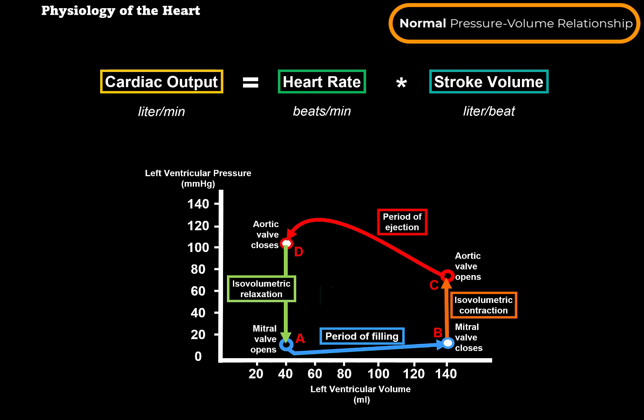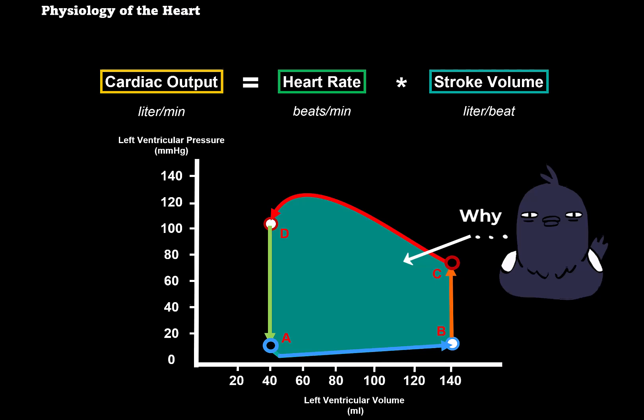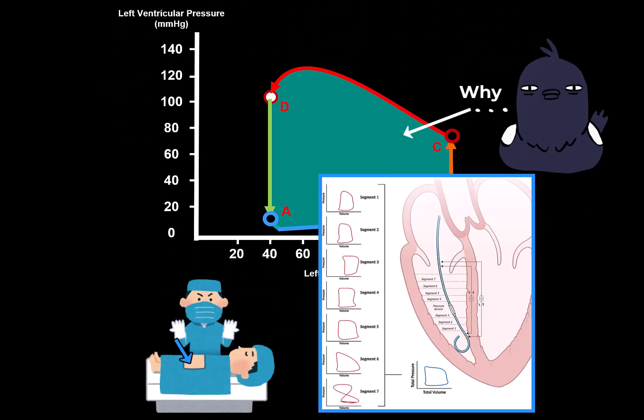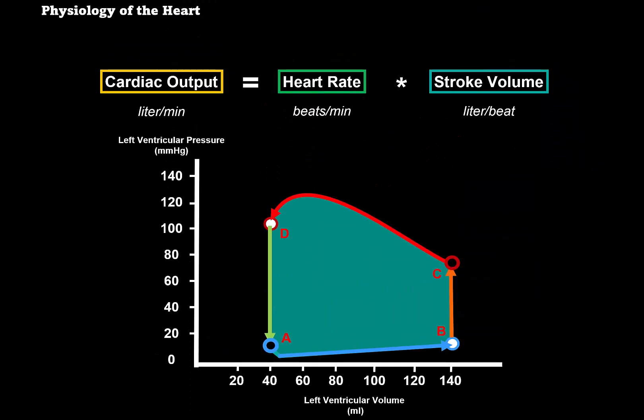Stroke volume on this graph runs from the end-diastolic volume back to the end-systolic volume. Why do we make these graphs? If you insert a catheter with a pressure sensor into the left ventricle, you can record these pressure changes through the cardiac cycle. Non-invasive methods like ultrasound with Doppler work too. Pressure-volume curves help assess how well the heart pumps blood, the efficacy of cardiac muscle, and the health of the heart valves. Abnormal pressure-volume loops can indicate heart failure, valve disease, and cardiomyopathies, guiding treatment decisions.